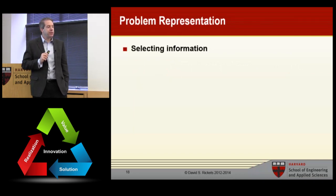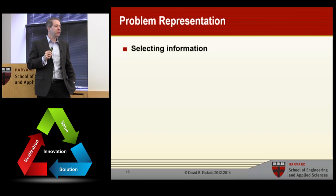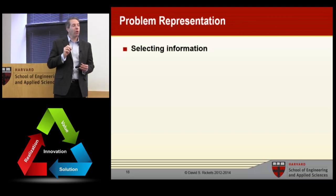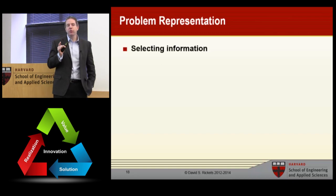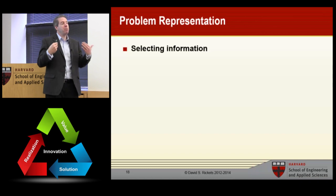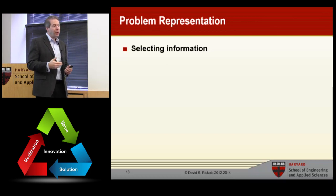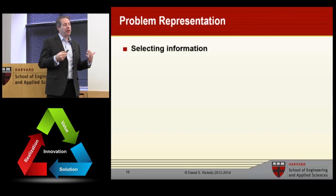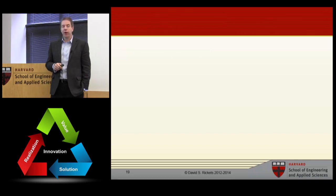The next piece of problem solving is representation. I want to do an exercise on selecting information. Take out a sheet of paper — I'm going to go through a series of sentences and I want you to write down the words you think are important. You're probably confused, thinking: how do I know what's important? Well, this is a lot like most problems you experience in life. You're receiving information about the problem constantly, often before you really know what the problem is. I want to show you how our minds are able to form a representation of what's important and what's not.